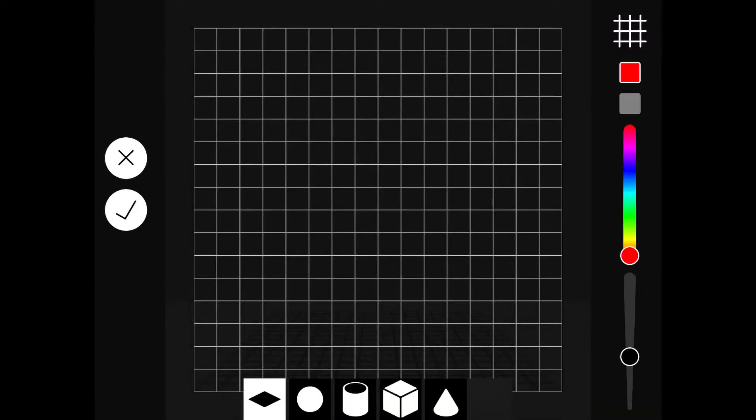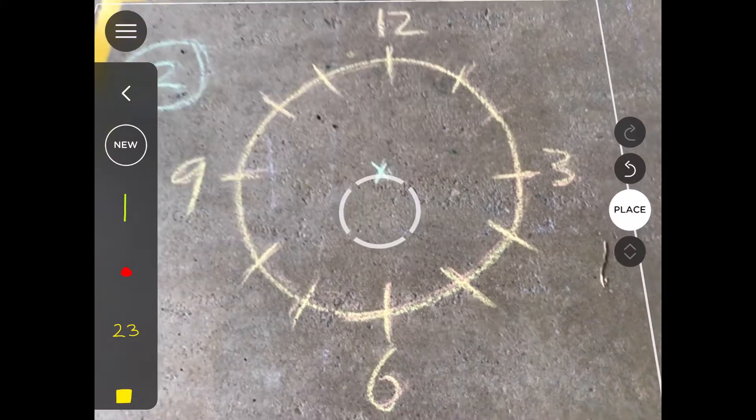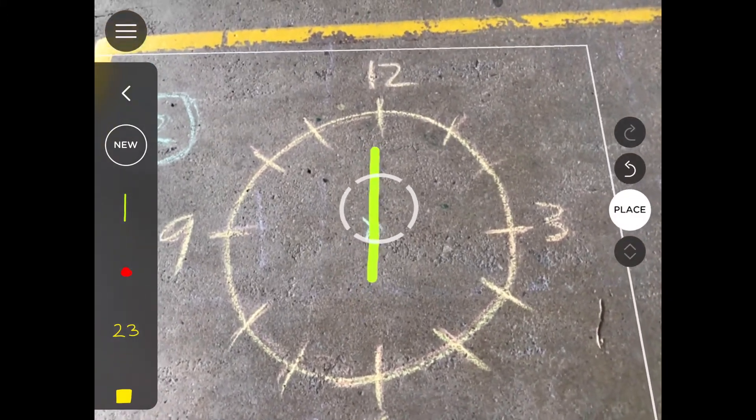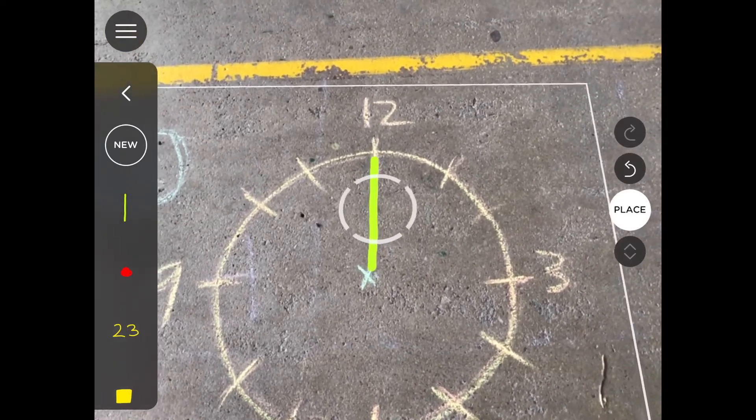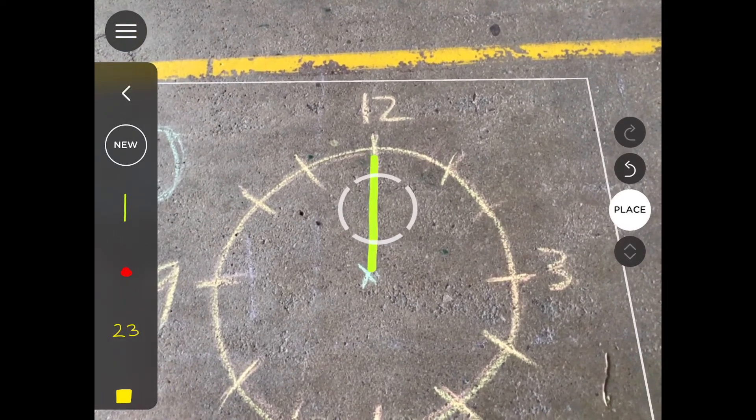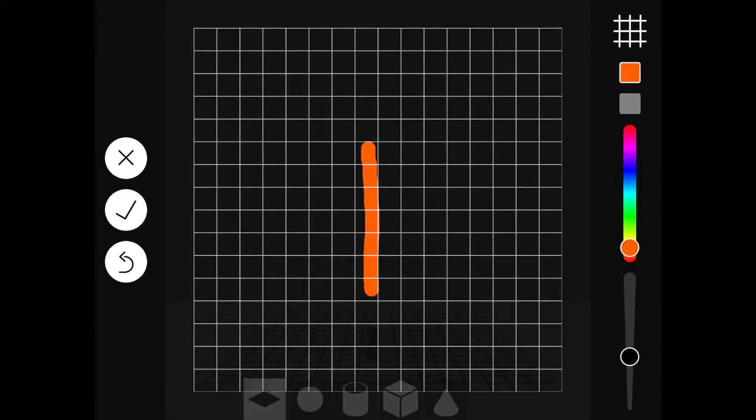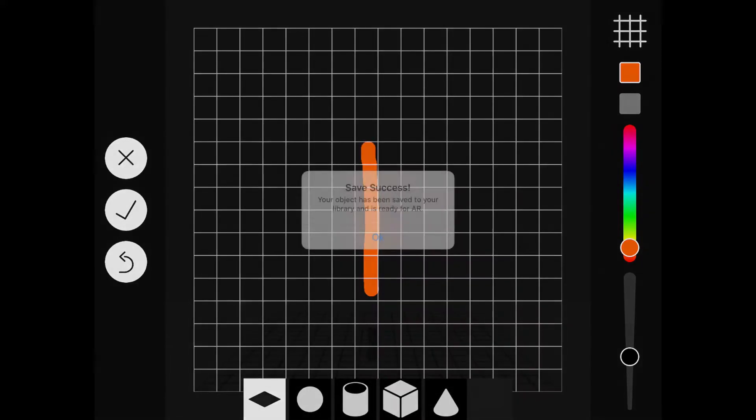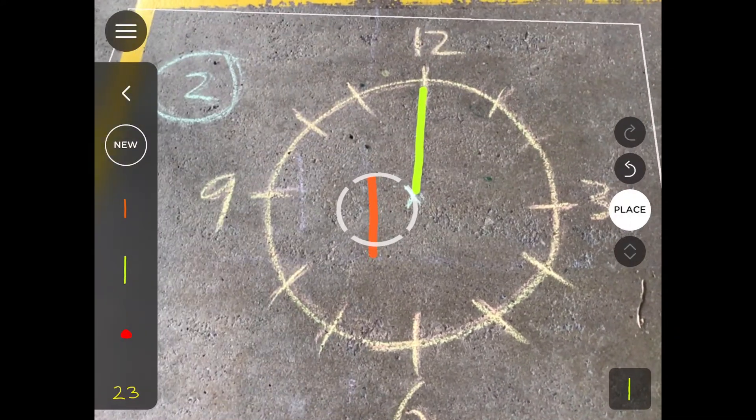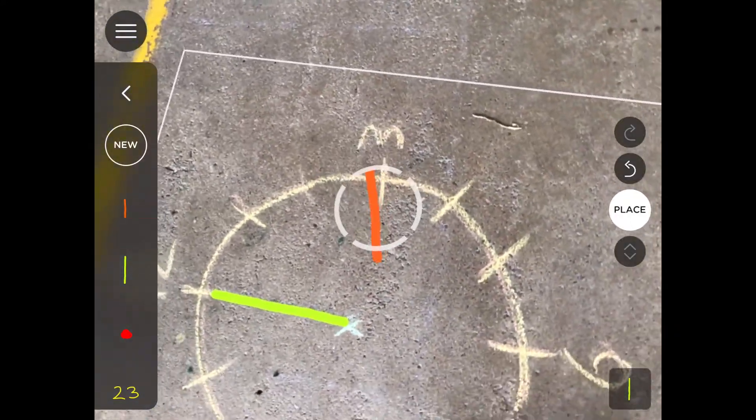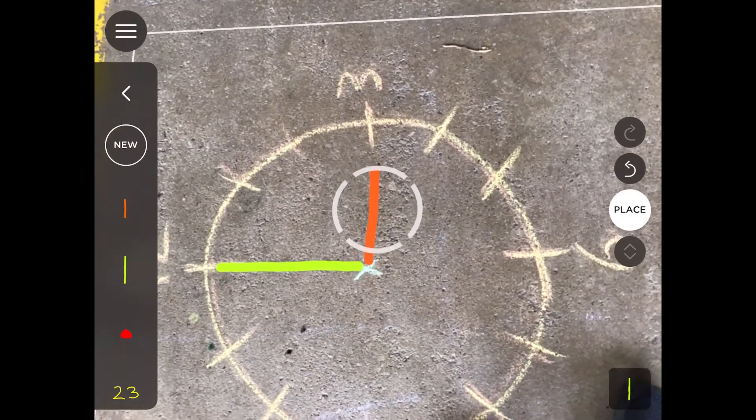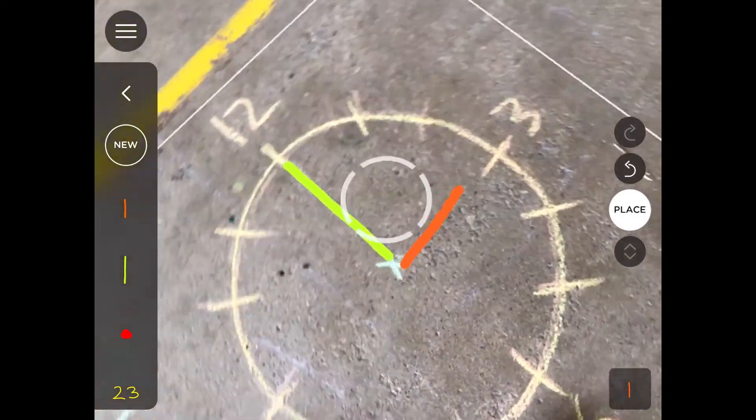So I select new and the paintbrush. Choose a colour. This is going to be for the minute hand. Push the tick, OK. Select it and bring it in and I can just make it a little bit smaller and I can place that for my minute hand to go to the 12. Now select new again, paintbrush, different colour. And I can select the hour hand. Push OK, bring it in. There we go. There's number three there. Place. Now I've got number three made on my AR clock.